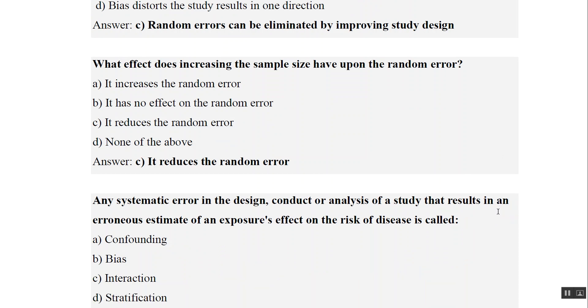Any systematic error in the design, conduct, or analysis of a study that results in an erroneous estimate of an exposure's effect on the risk of disease is called bias.